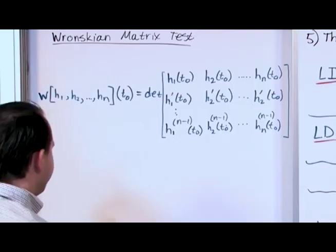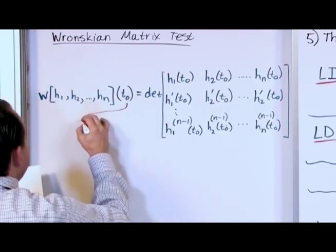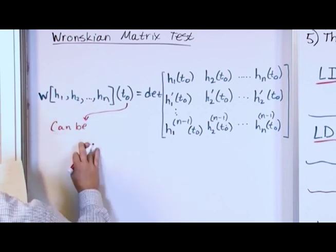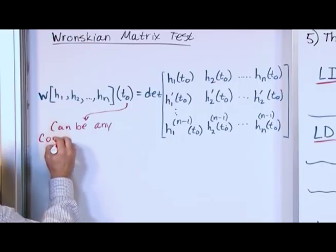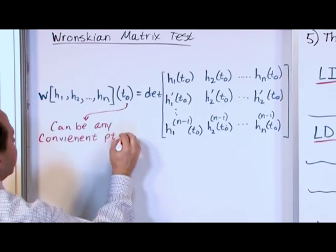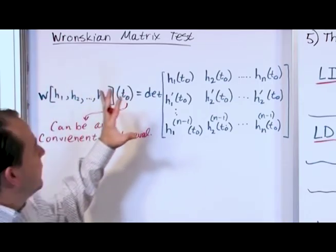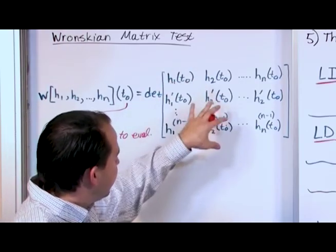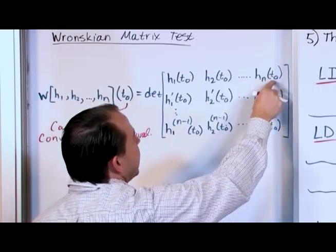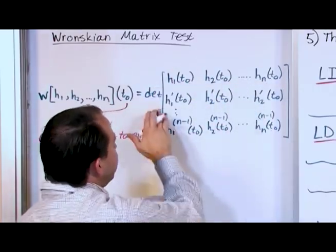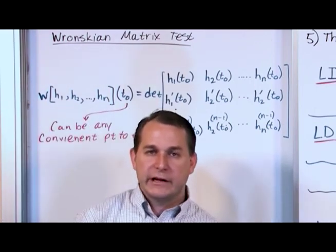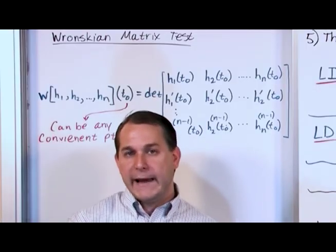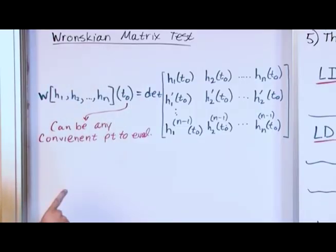Once you pick T₀ and evaluate every term in the matrix at that point, you have a matrix full of numbers. You then take the determinant of that matrix — by hand or with a calculator. The determinant gives you back a single number, and that number tells you whether you've passed or failed the Wronskian test.